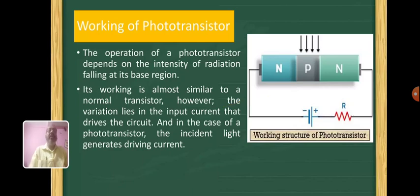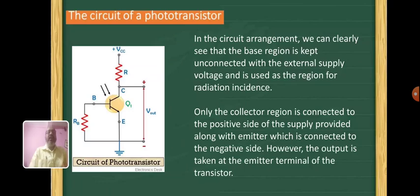Working of a phototransistor: the operation of a phototransistor depends on the intensity of radiation falling on its base. Its working is almost similar to a normal transistor, however, the variation lies in the input current that drives the circuit. In the case of the phototransistor, the incident light generates driving current.